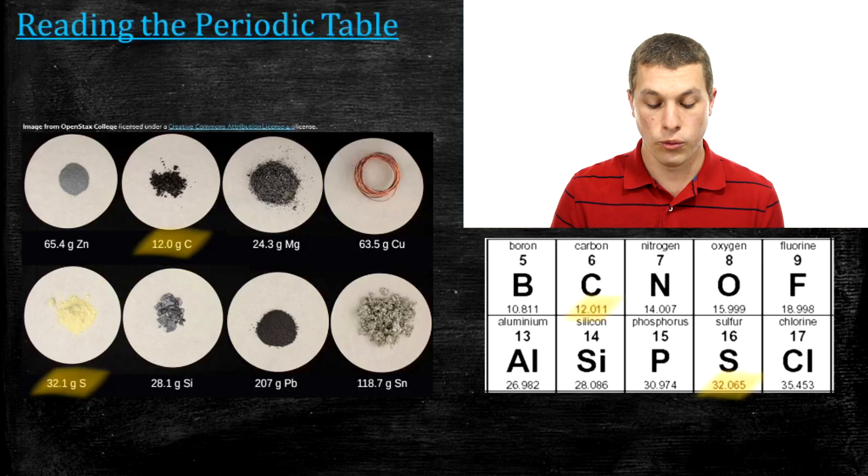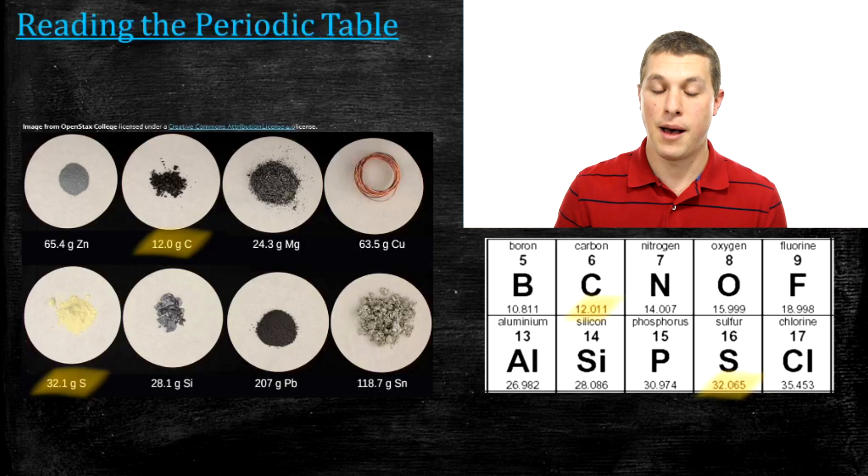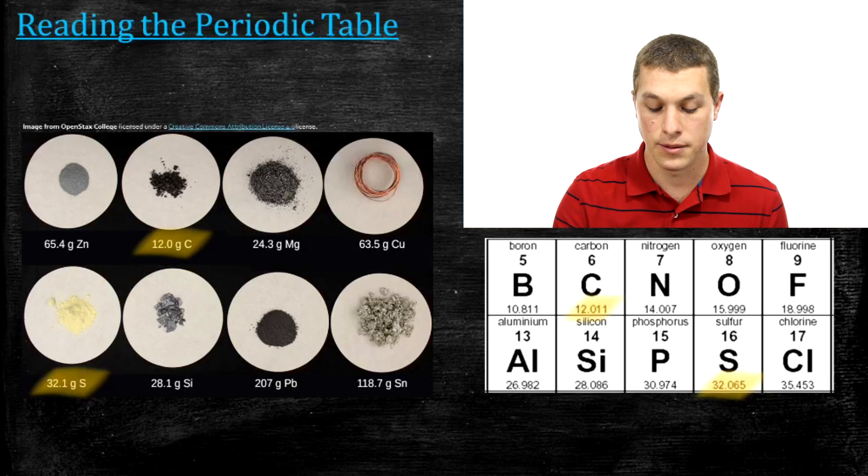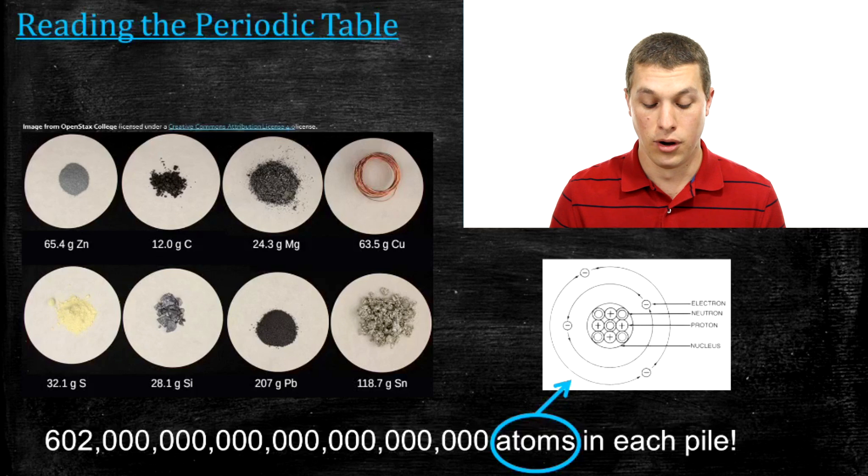So even though there's different weights of elements there, each one of those piles weighs something different, the thing they have in common is that all of them have exactly one mole of atoms on that plate. And if you write out the mole, it's 6.02 and then a bunch of zeros, and that's exactly how many atoms are in that pile.